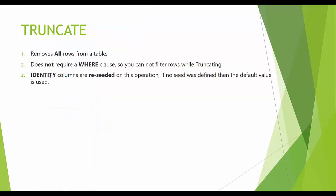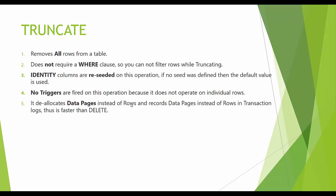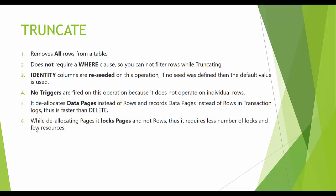When you truncate a table, identity columns are reseeded — this does not happen with DELETE. Also, no triggers are fired on a TRUNCATE operation because it does not operate on individual rows. Instead, it deallocates data pages rather than rows. In SQL Server, rows are stored in 8K pages and 8 pages make an extent. TRUNCATE logs deallocated data pages instead of individual rows, making it faster than DELETE. It locks pages rather than rows, requiring fewer locks and resources.